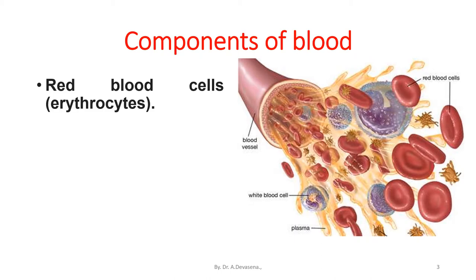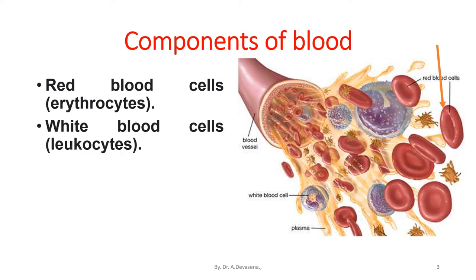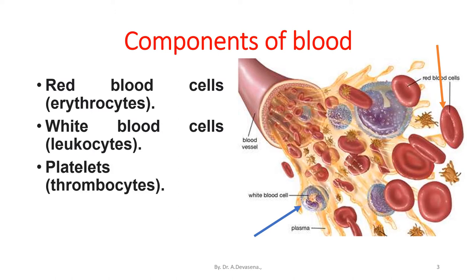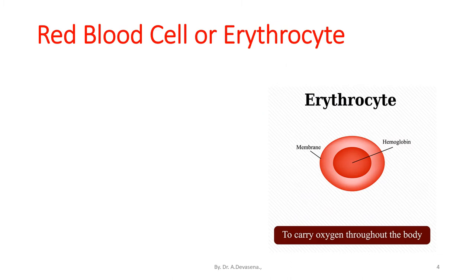The blood consists of red blood cells or erythrocytes. Here is a representation of red blood cells. And white blood cells or leukocytes. Here is a representation of white blood cells. And we have platelets or thrombocytes.